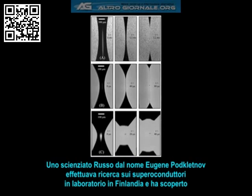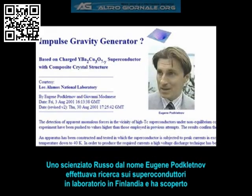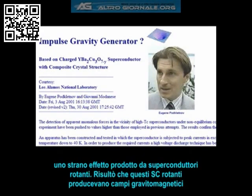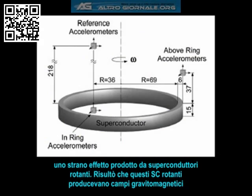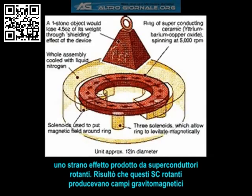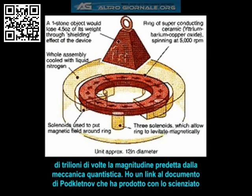A Russian scientist by the name of Eugene Podklitnov was doing superconductor research in a laboratory in Finland when he discovered a strange effect produced by rotating superconductors. It turns out that these rotating superconductors produced gravitomagnetic fields that were trillions of orders of magnitude larger than were previously predicted by quantum mechanics.